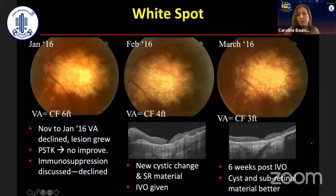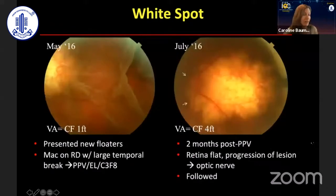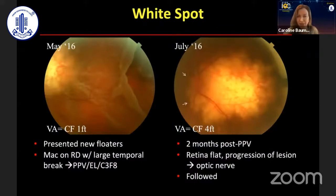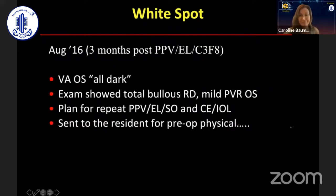The patient really did not want to be on oral prednisone. Then the patient came back with a retinal detachment — a macula-on retinal detachment with a large break — and had a vitrectomy with gas. The post-operative result shows reattachment, and still this lesion is growing. So the patient came back again with vision all dark, with a bullous detachment and PVR.